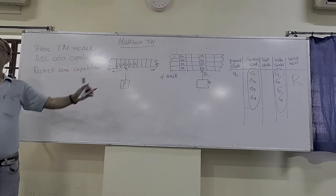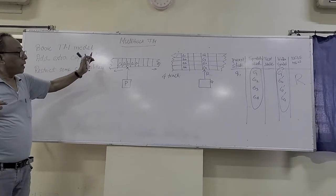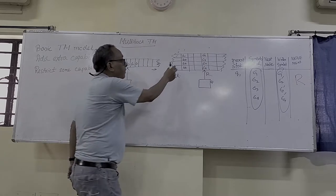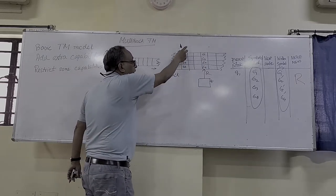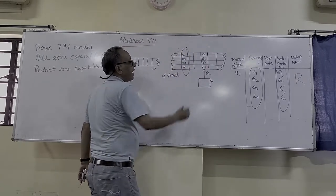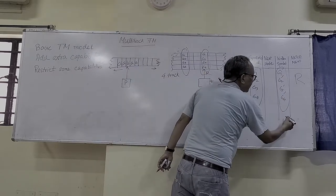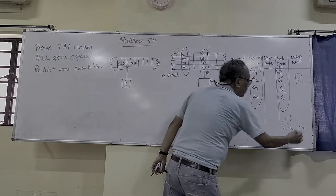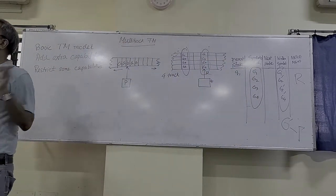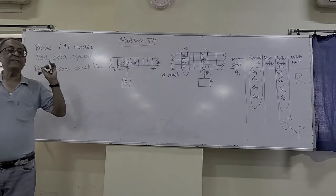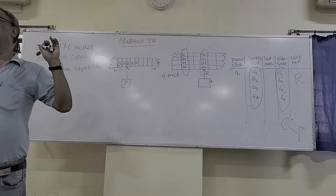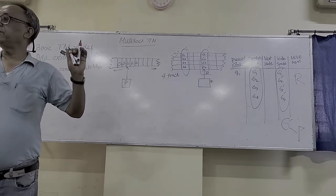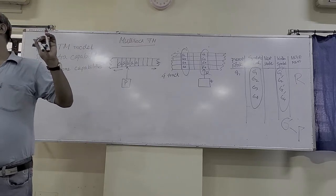If we have multiple tracks and we combine all the symbols at each position into a single composite symbol belonging to the tape alphabet gamma, then it is nothing but a single-tape Turing machine. So multi-track Turing machine is equivalent to single-tape Turing machine and does not add any extra power.